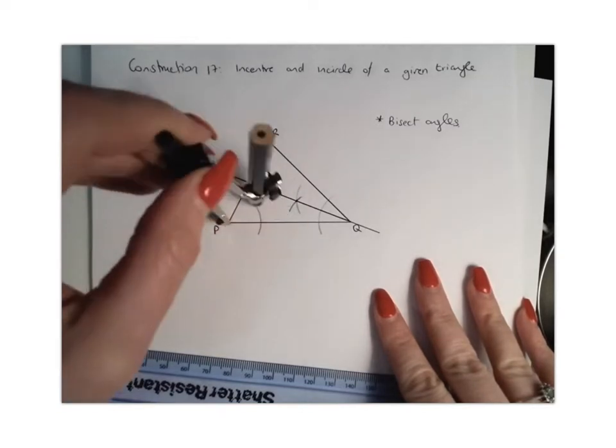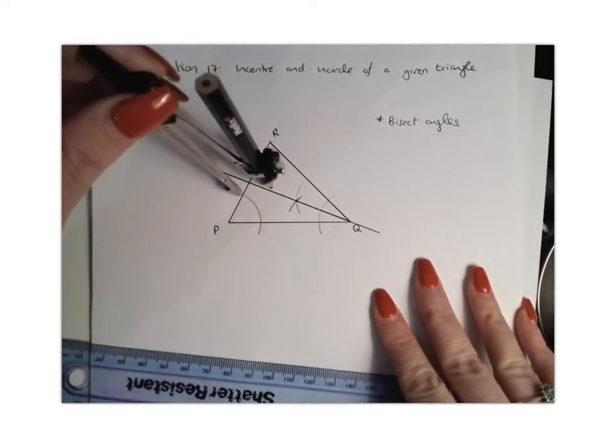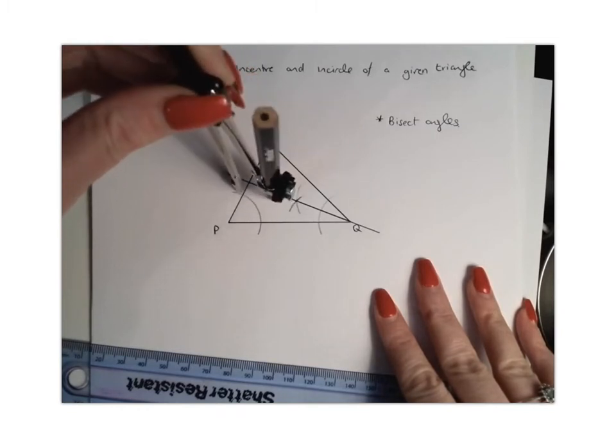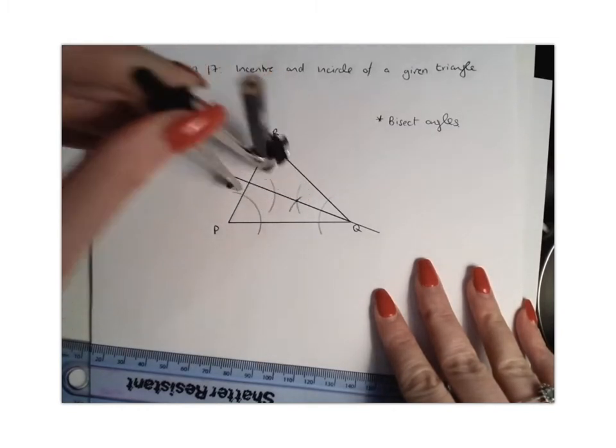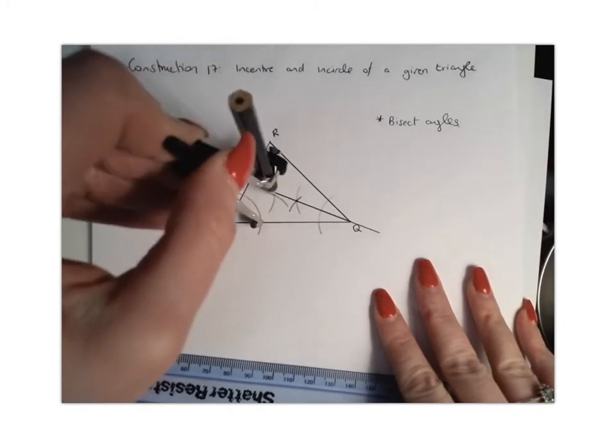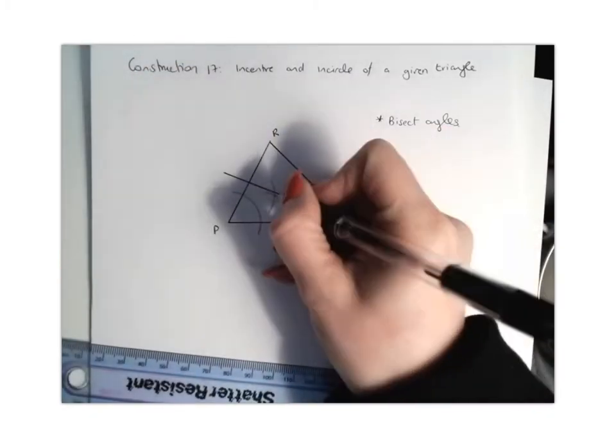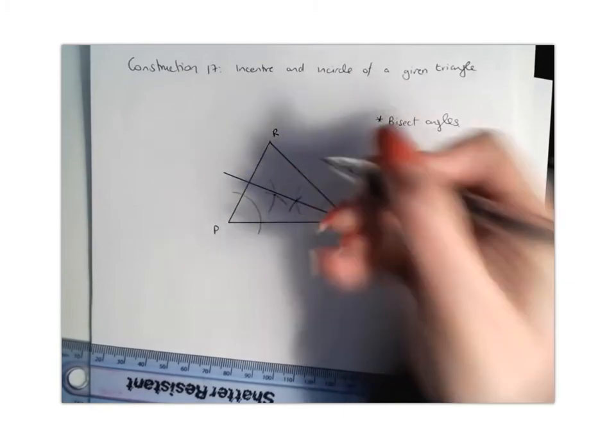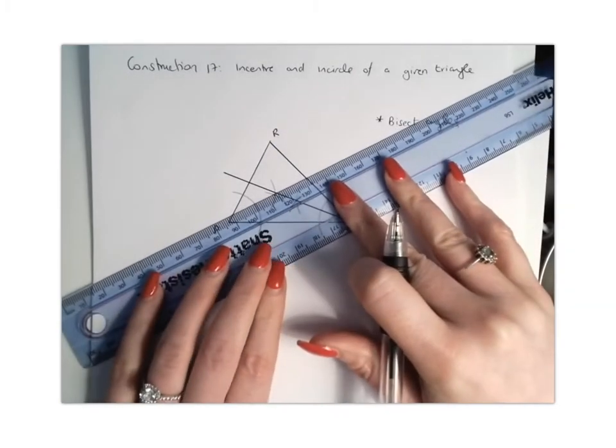Again, you're going to draw yourself an arc. From that point you're going to draw another arc. And from that point you're going to draw another one. And then where they intersect you're going to mark it. And you're going to connect that up to point P.